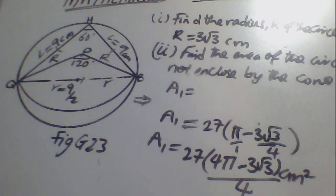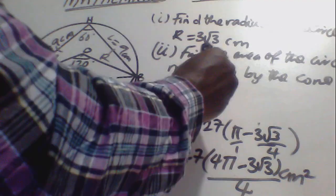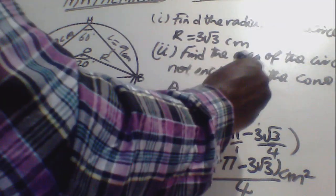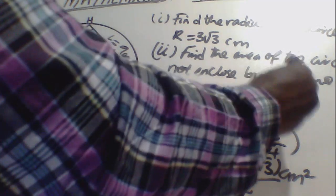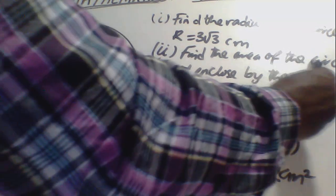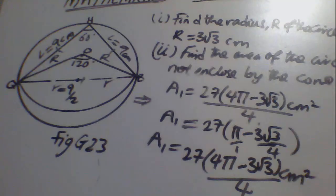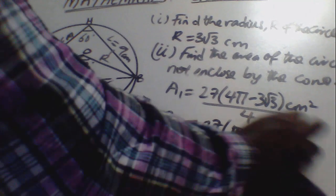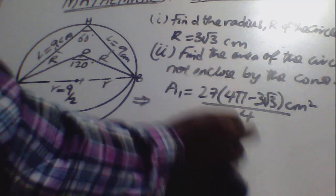Therefore the area of the circle not enclosed by the cone is 27(4π - 3√3)/4 cm².